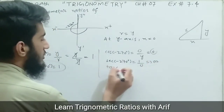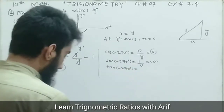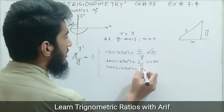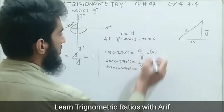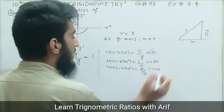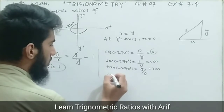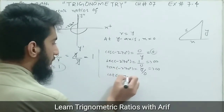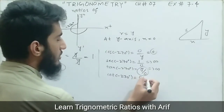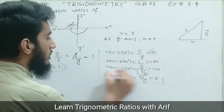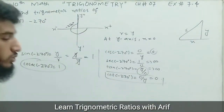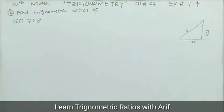Tangent of negative 270 degrees equals perpendicular divided by base equals y divided by x. Since x equals zero, y divided by zero gives undefined. Cotangent of negative 270 degrees is the reciprocal of tangent, so zero over y gives zero. These are the required six trigonometric ratios for negative 270 degrees.